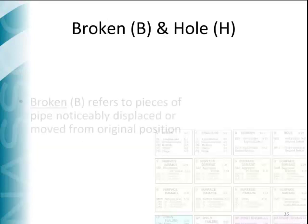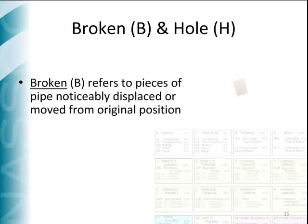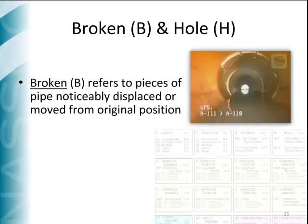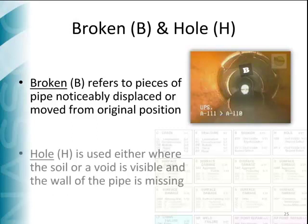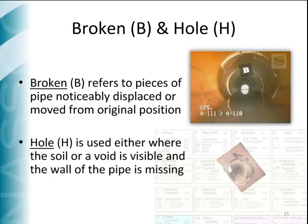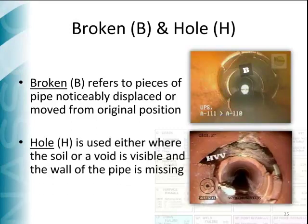The broken group, which is represented with the letter B, refers to pieces of the pipe displaced and not in their original position. Hole is used to describe when pieces of the pipe are missing, leaving the soil visible or a hole visible.